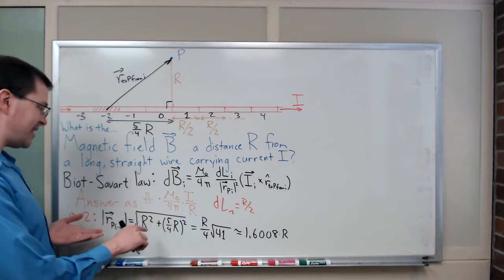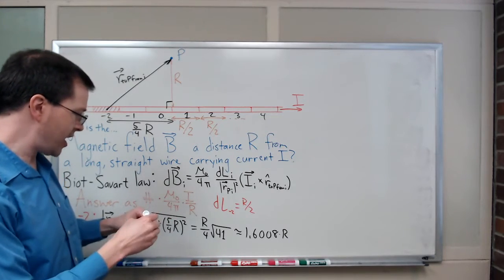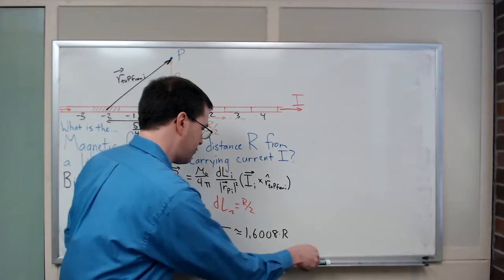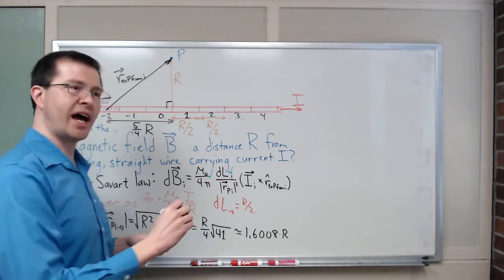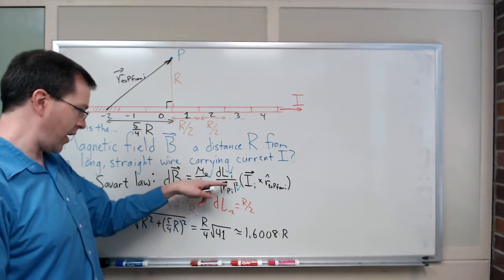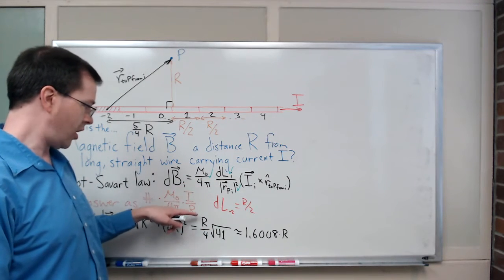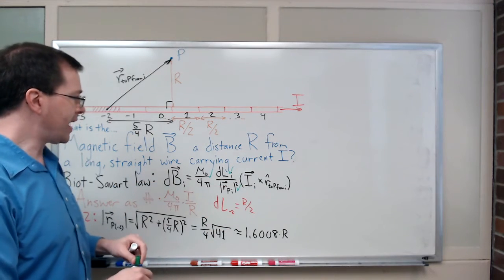That is my distance. Pieces in this equation that I have taken care of: the mu naught over 4 pi I'm just keeping, the dL I know what that is, that's R over 2. Now I know what that distance is, it's the R squared, there's this thing squared. So R squared over 16 times 41, this piece.